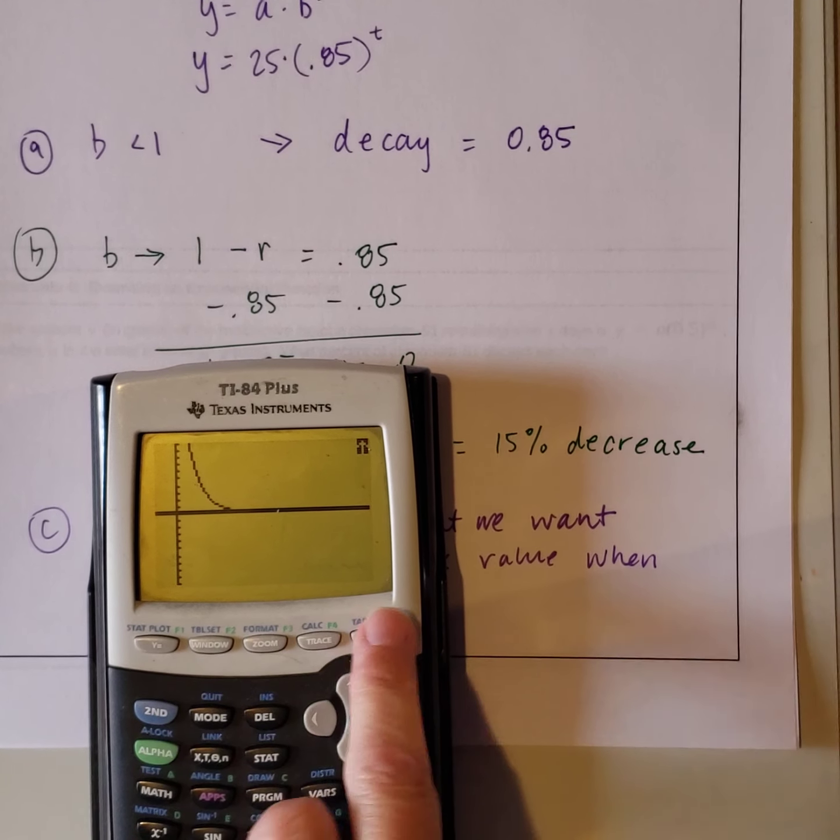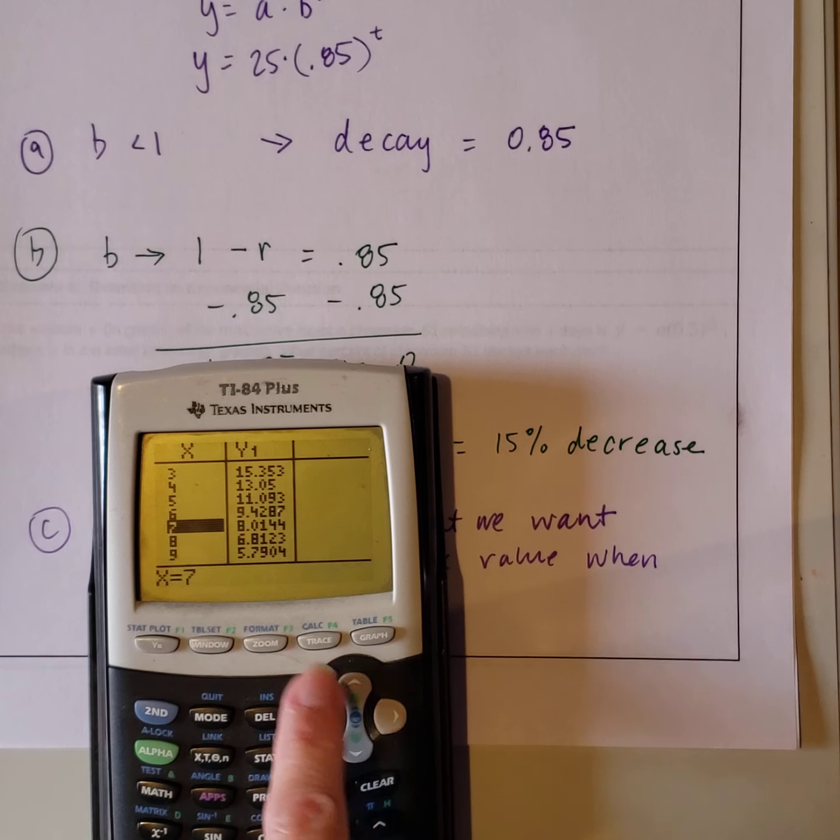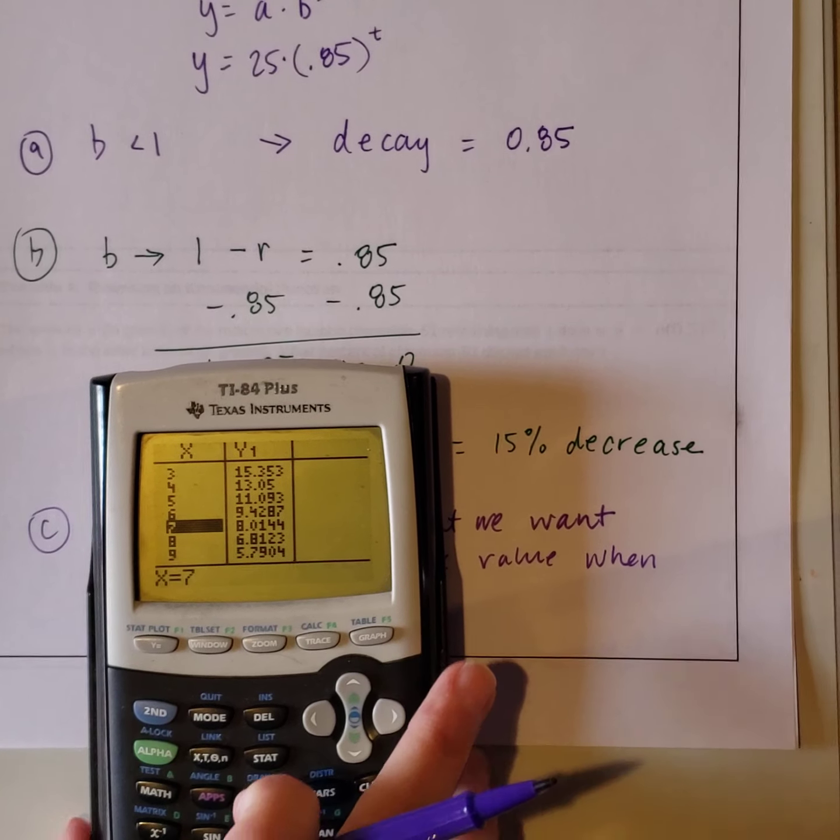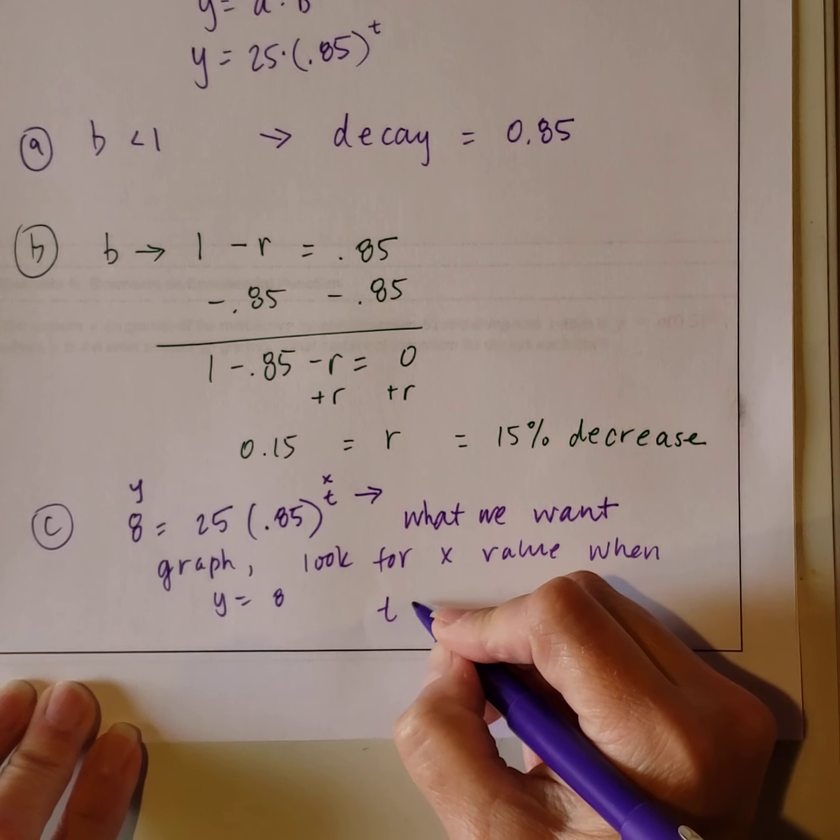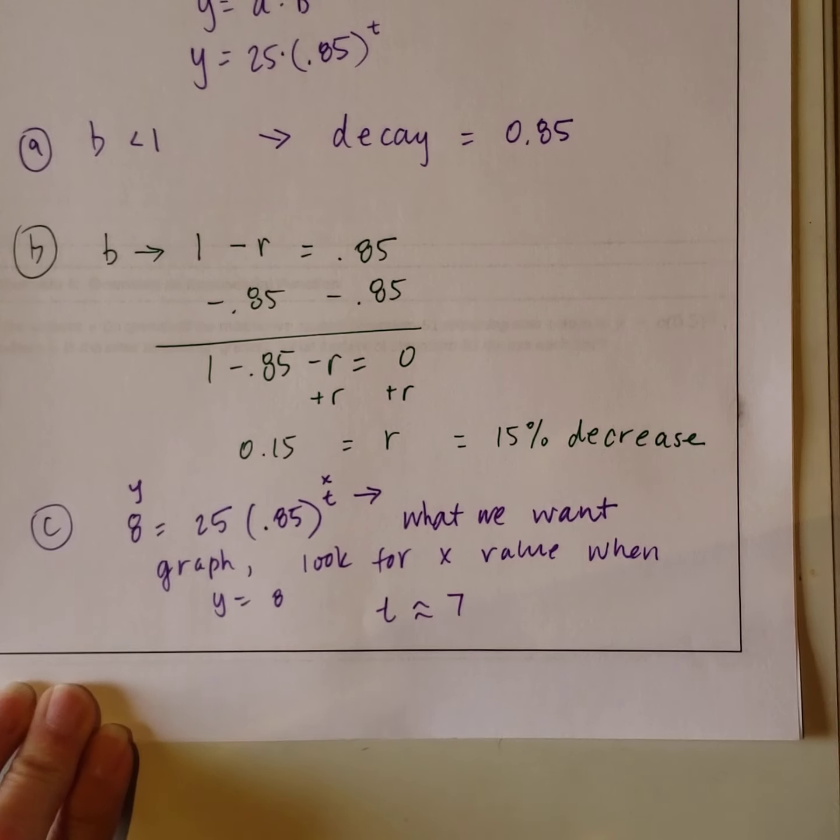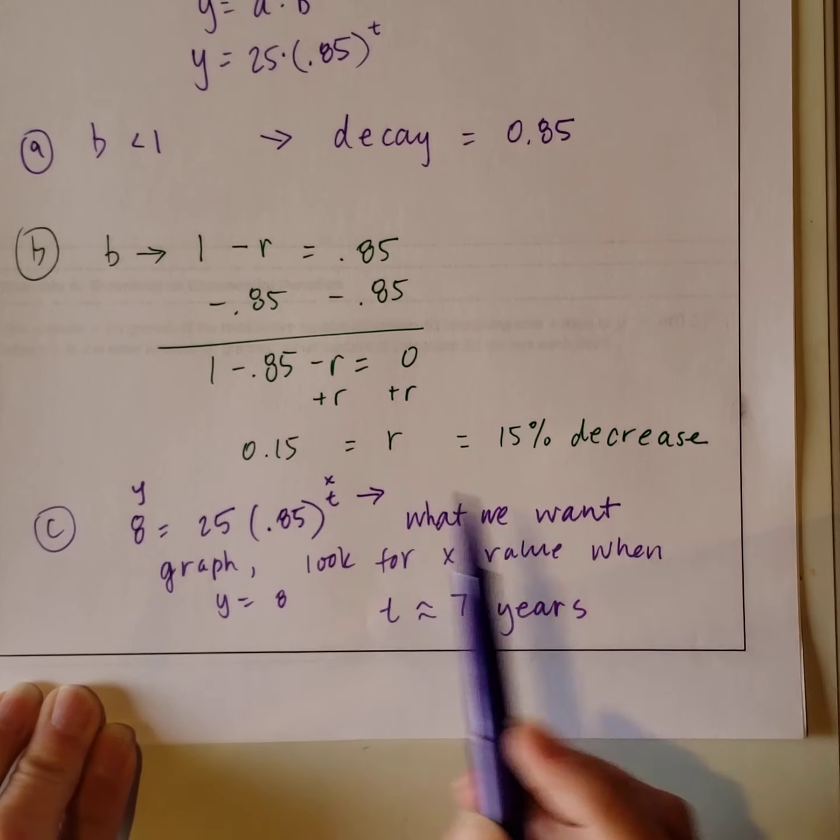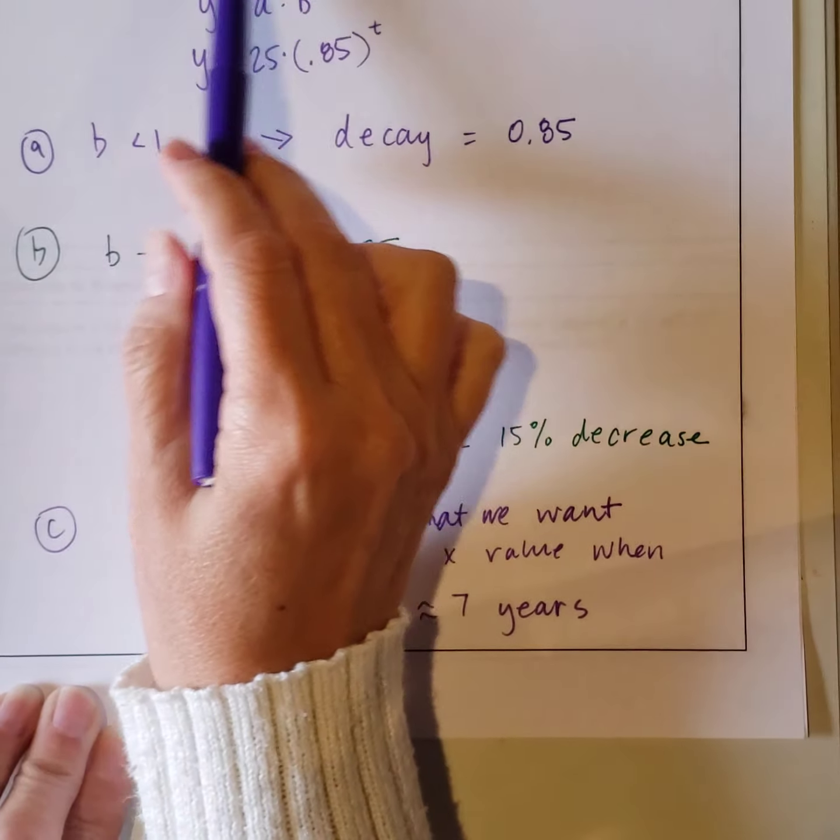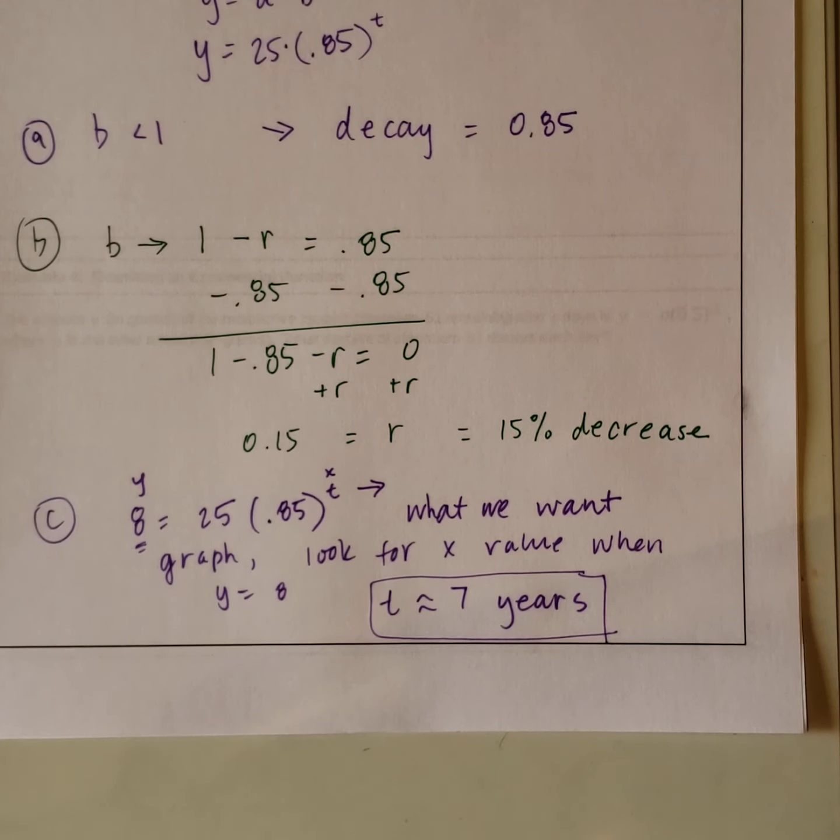And now we want to look at the table. So we're looking for where y equals 8. So y is close to 8 here. So that means our x or our time. So when y is close to 8, t or x is approximately 7. So we were asked for t is the number of years. So about 7 years. After about 7 years, then the value of our car will be about $8,000. So remember we replaced the 8,000 with the 8 since the value of the car was in thousands of dollars.